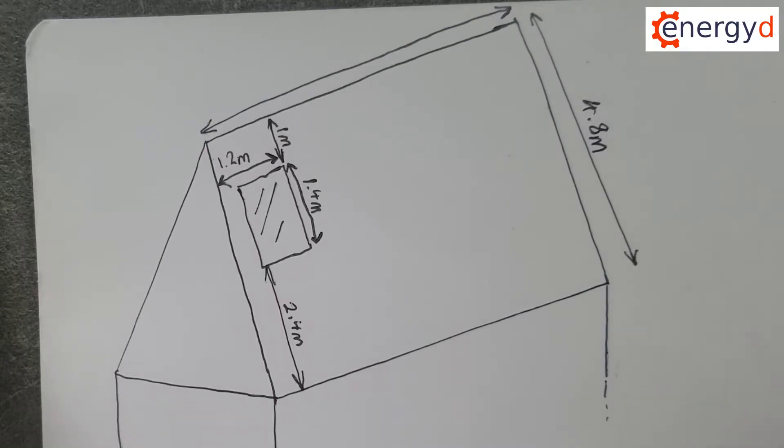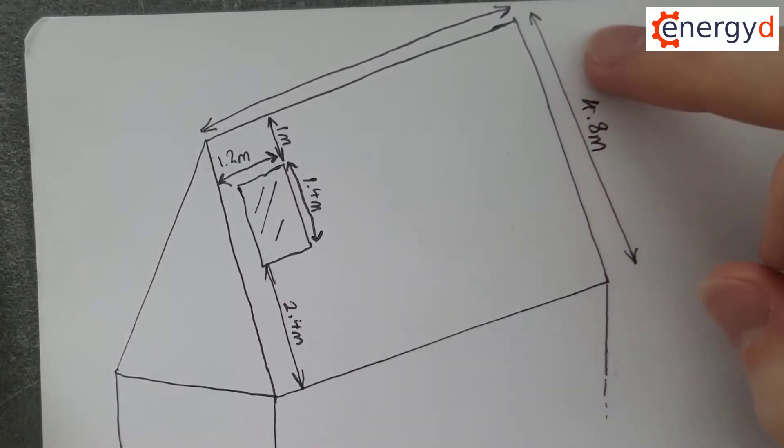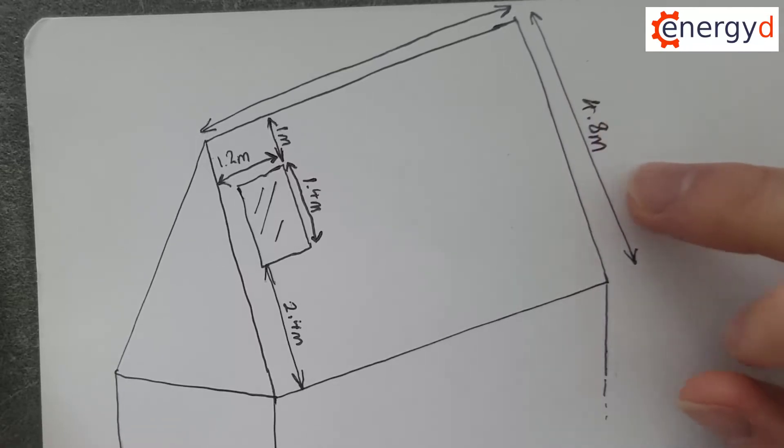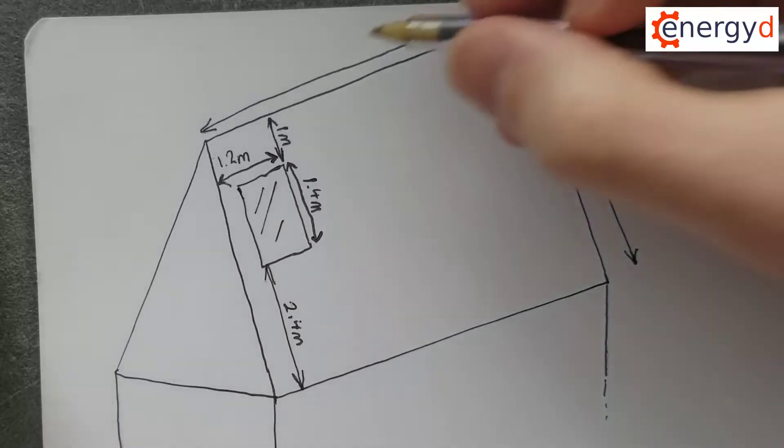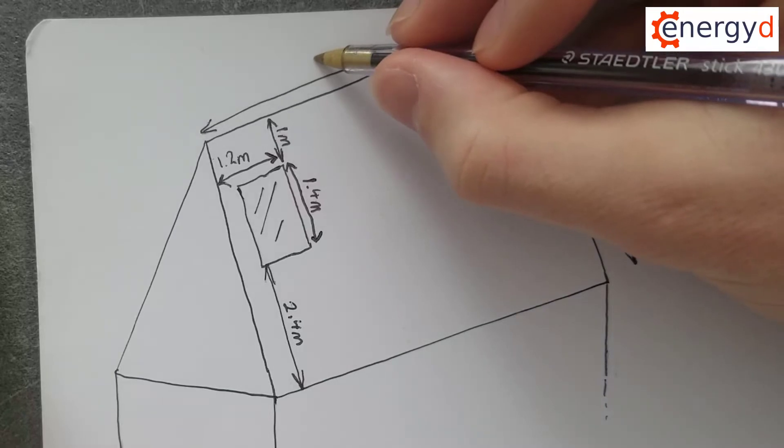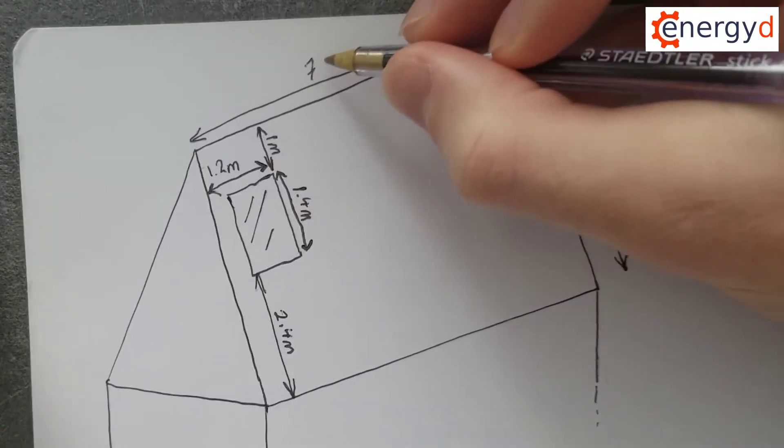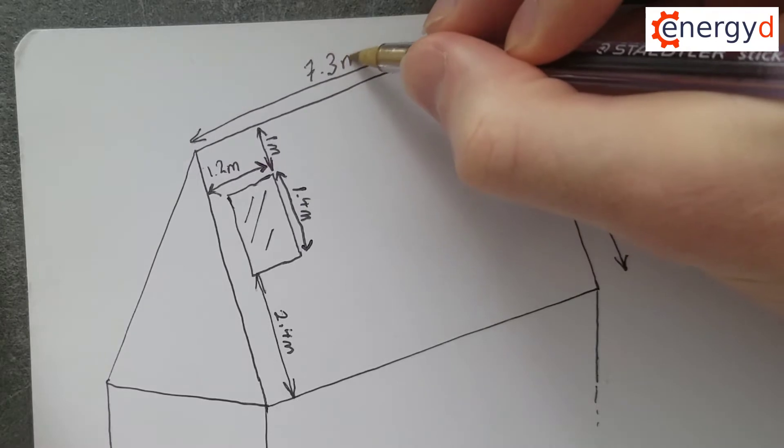As you can see here, it's got a rectangular shape. It's 4.8 meters and we'll call it 7.3 meters for example.